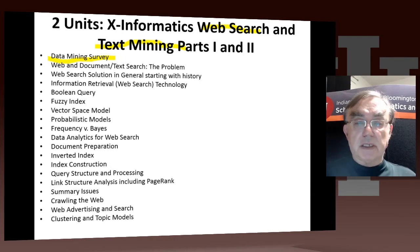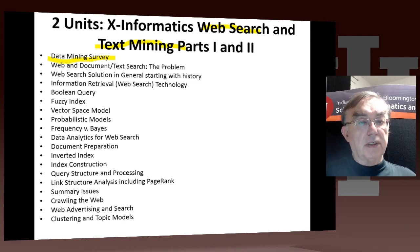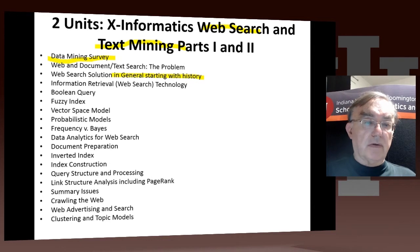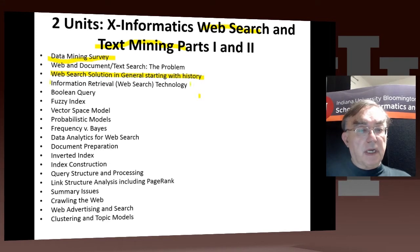Then we state the problem of web search — what the web is, what its structure is, which parts are linked to which other parts, and the number of URLs in a page. We look at web search in general, starting with its history. It's now incredibly sophisticated, but it started off relatively simply, and you can even relate it to libraries. From a computer science point of view, web search started off as information retrieval.